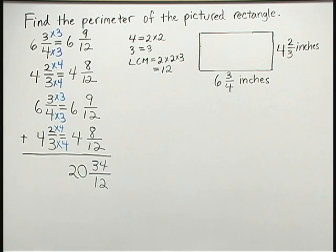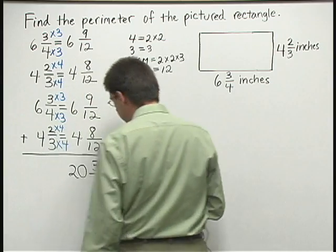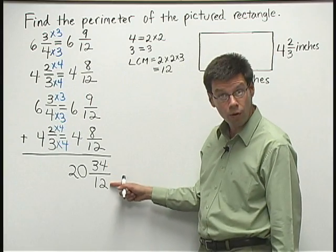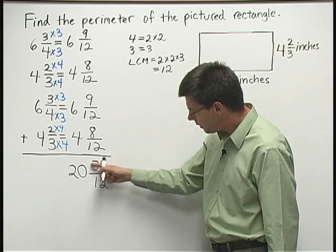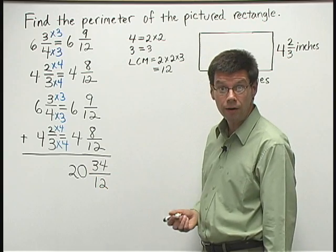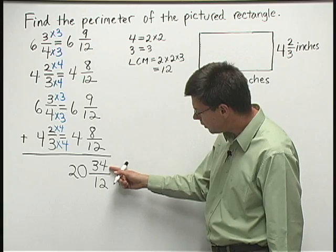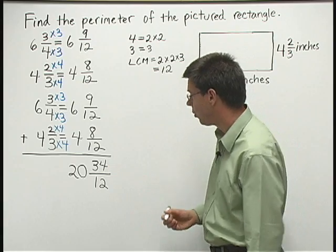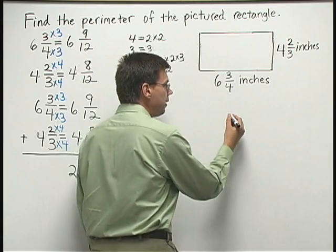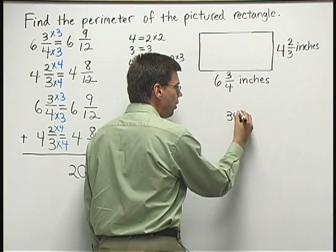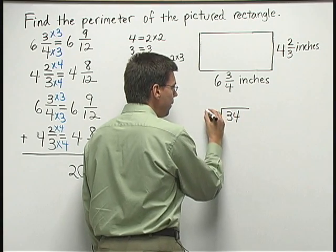Now I have twenty and thirty-four twelfths, but that answer is far from simplified here. There's a couple things I still have to do with my fractional part. Because I have a larger number on top, the thirty-four over twelve, I want to convert the fractional part to a mixed number. I'm going to divide out the thirty-four twelfths. Let's do that right here. I'll take thirty-four and divide by twelve.